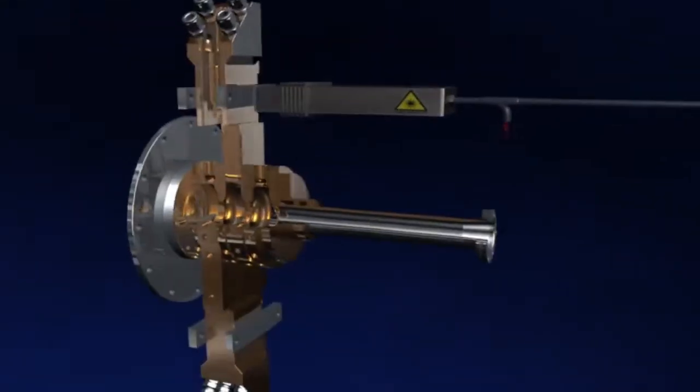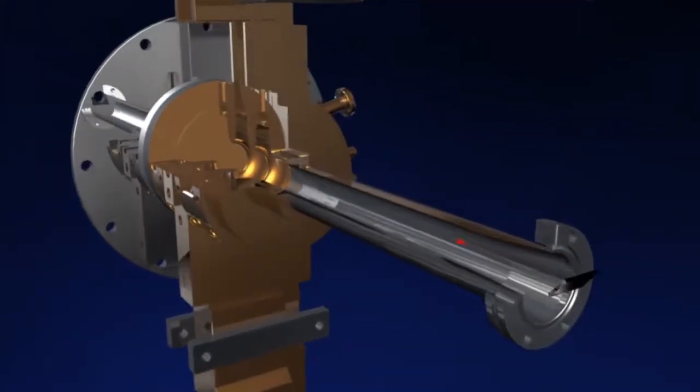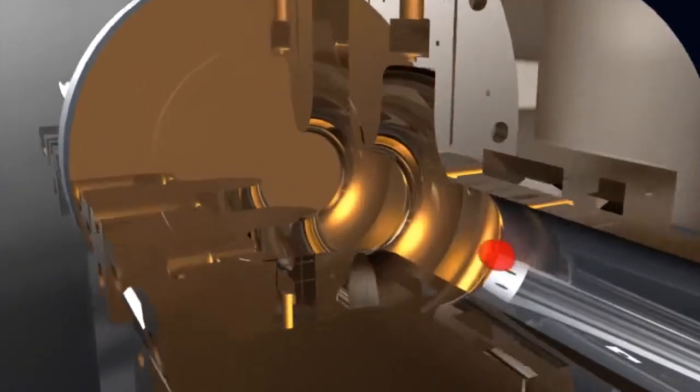The production of X-ray light begins inside the electron source. Using a laser flash, electrons are released from a copper plate with an extremely smooth surface.